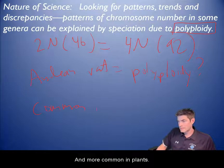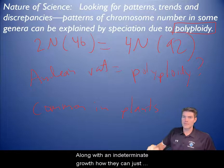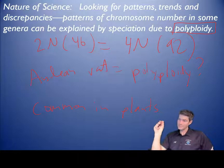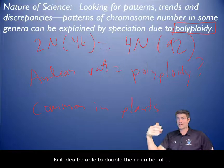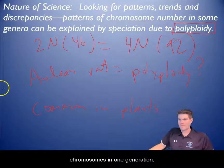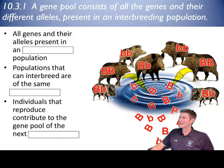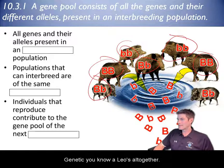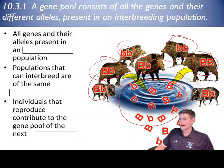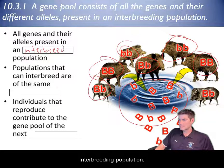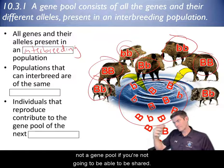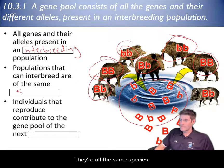Polyploidy is more common in plants. Remember, plants with their indeterminate growth — how they can just start growing when they feel like it — have this ability to double their number of chromosomes in one generation. An interbreeding population has to be interbreeding, or else you can't have a gene pool if genes aren't being shared, and they're all the same species.